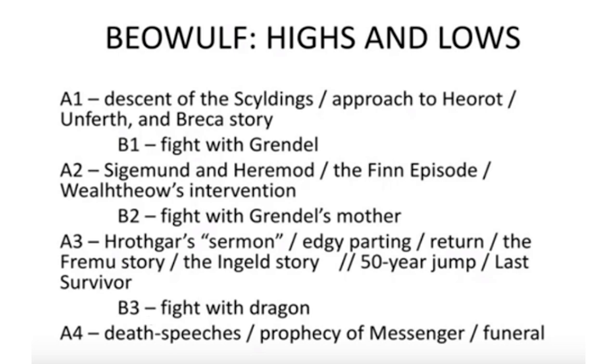All of the politics, cultural information, side stories, and exposition take place in the four A sections. Then there are B sections — the action sections where Beowulf is fighting a monster: Grendel, Grendel's mother, and a dragon. Tolkien's point in 'The Monsters and the Critics' is that there has been a disproportionate focus on the A sections — the historical analysis and political situations — but the heart of Beowulf is these B sections. It's the action; it's Beowulf fighting the monsters. That is the heart and meat of Beowulf, and that's what it should be appreciated for.